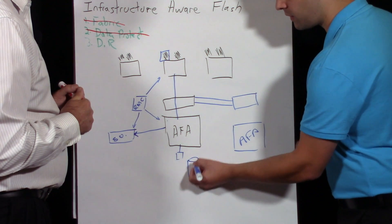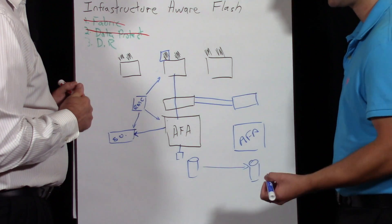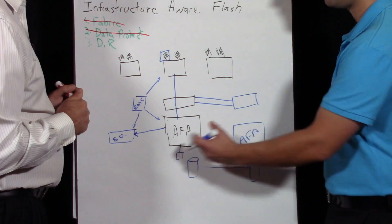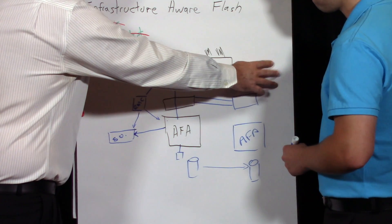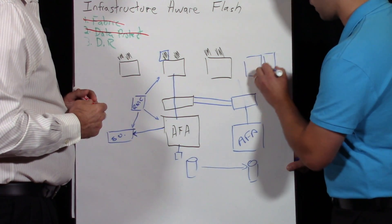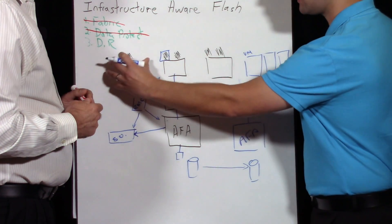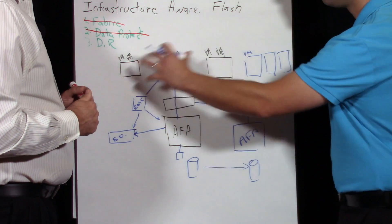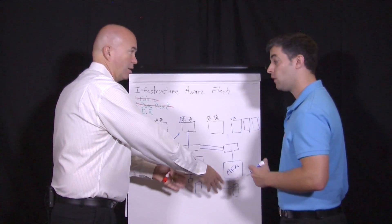What we can then do is replicate a volume between the two all-flash arrays so the same volume is essentially available from both arrays. You can have virtual machines in the secondary site. We create a single vSphere cluster that's stretched across both sites.